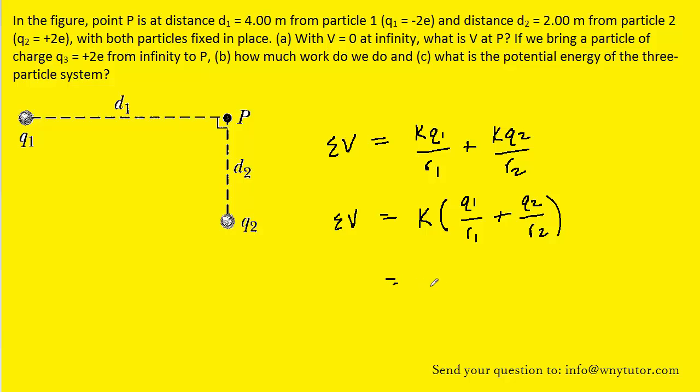And then we can fill in the known values. K is a constant, and it has a value of 8.99 times 10 to the power of 9. Q1 would be the charge on particle 1. That was stated to be negative 2 times E. So that would be negative 2 multiplied by the elementary charge, which is 1.6 times 10 to the minus 19th coulombs, and then divided by the distance from charge 1 to point P, which would be D1, and that was given to us in the problem as 4 meters.